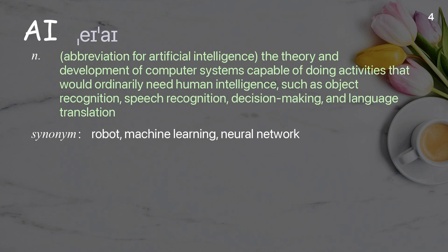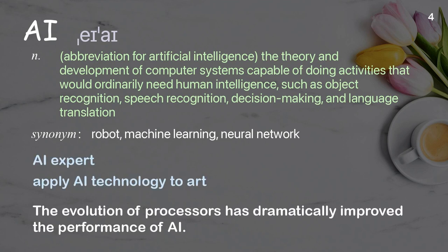AI: abbreviation for artificial intelligence — the theory and development of computer systems capable of doing activities that would ordinarily need human intelligence, such as object recognition, speech recognition, decision making, and language translation. Examples: AI expert, apply AI technology to art. The evolution of processors has dramatically improved the performance of AI.